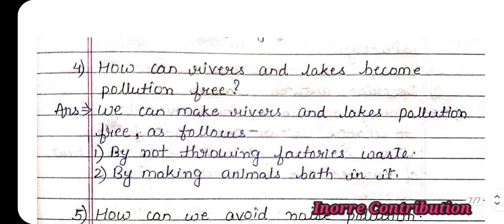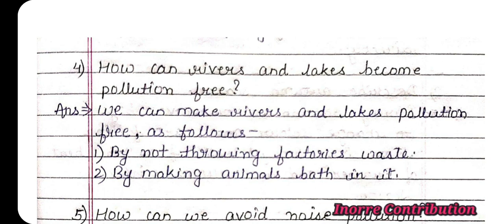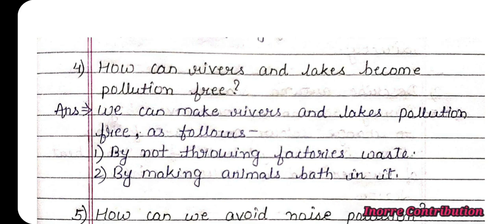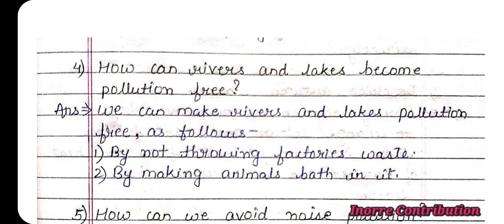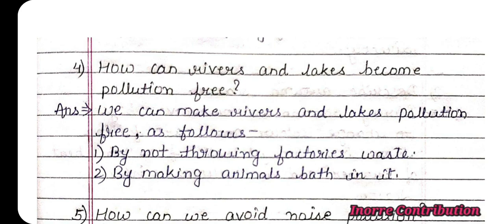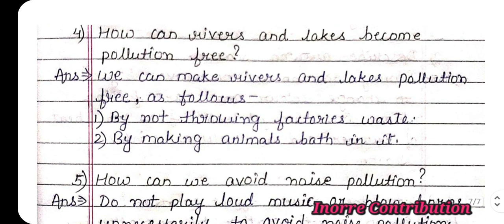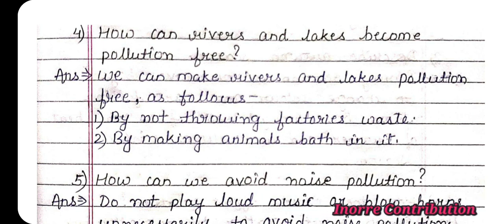Question four: How can rivers and lakes become pollution free? Answer: We can make rivers and lakes pollution free as follows — first, by not throwing factory waste into them; second, by not making animals bathe in them.